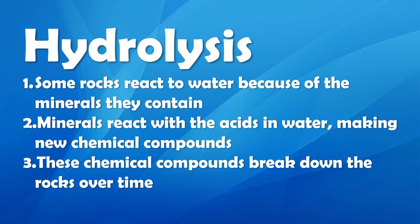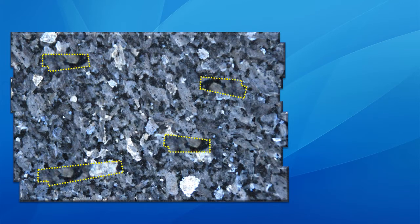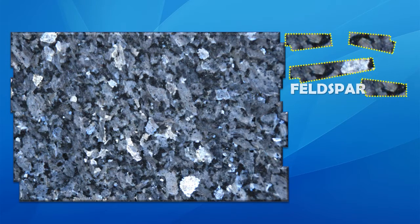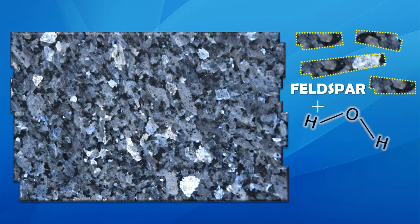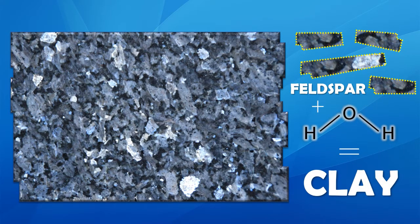An example of chemical weathering is hydrolysis. Some rocks react to water because of the minerals they contain. Minerals react with the acids in water, making new chemical compounds, and those chemical compounds break down the rocks over time. For example, in granite there exists feldspar. When combined with water, they react to form clay, which is much weaker than granite. So this is chemical weathering.